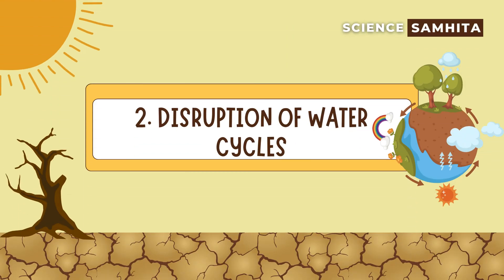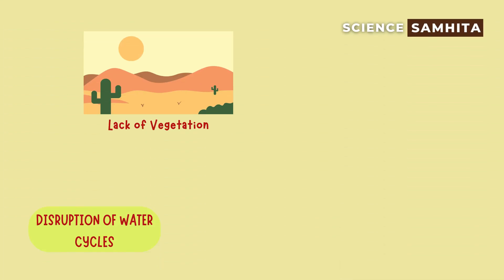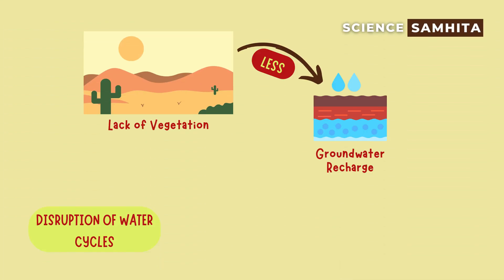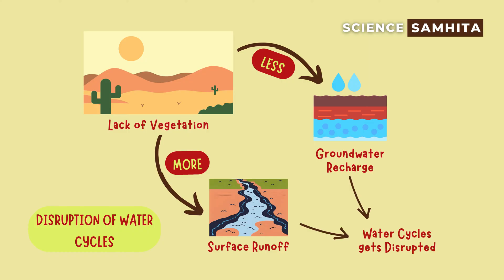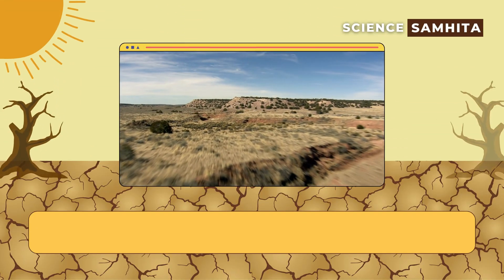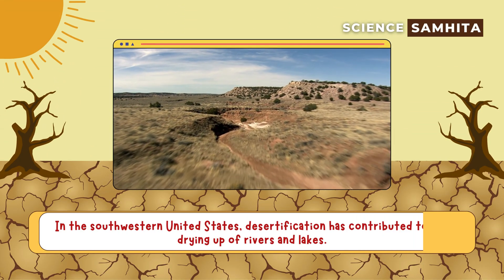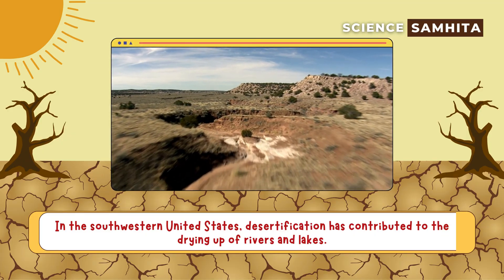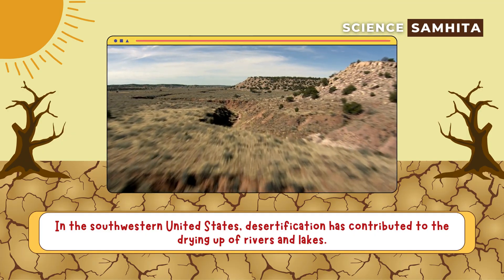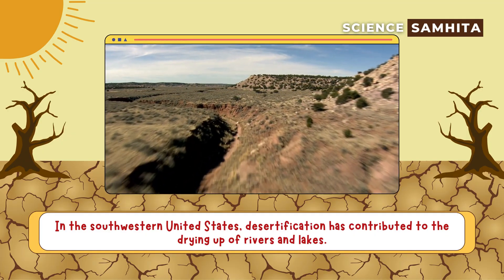Second, disruption of water cycles. Lack of vegetation reduces the soil's ability to retain water, affecting groundwater recharge and increasing surface runoff. For example, in the Southwestern United States, desertification has contributed to the drying up of rivers and lakes.